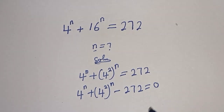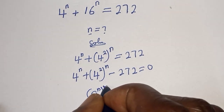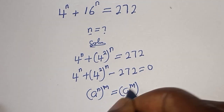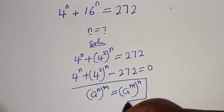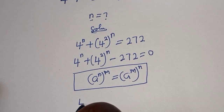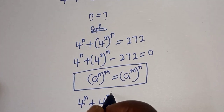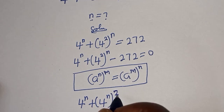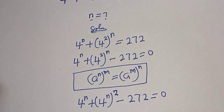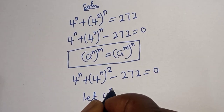Take note of this rule: a raised to power n raised to power m is equal to a raised to power m raised to power n. Applying this, we get 4 raised to power n plus 4 raised to power n squared minus 272 is equal to 0.